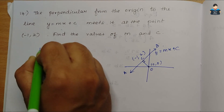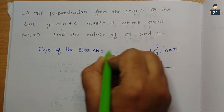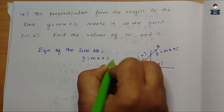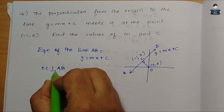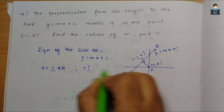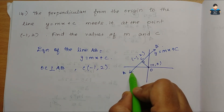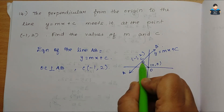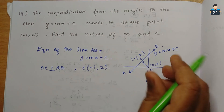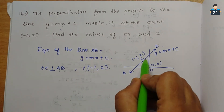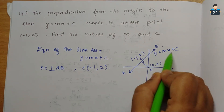The equation of line AB is y = mx + c. The point C is perpendicular to AB, and C is the point (-1, 2). Since the line AB passes through the point (-1, 2), that point must satisfy the equation of line AB.